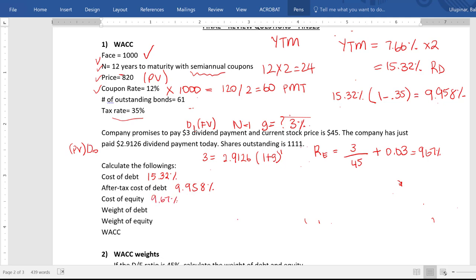Now, we have our cost of equity 9.67%. And finally, we are going to calculate the weights. To be able to calculate the weight, we have to know how much we borrow from debt holders, how much we borrow from shareholders. So the price of the bond is 820. That information is written right here. And we have 61 bonds outstanding.